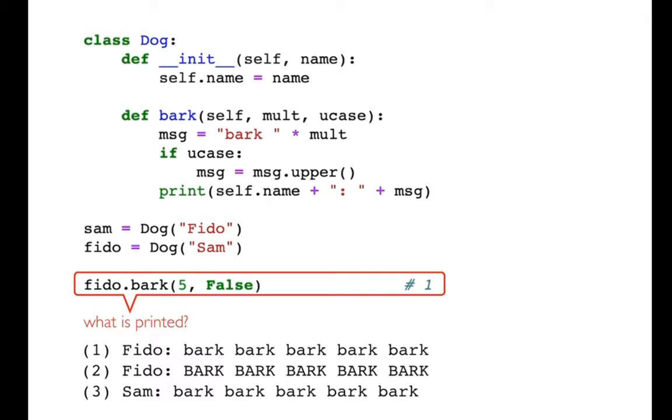Okay, so what happens here when I say fido.bark? Well it's trying to put these arguments in like this. Fido is going to go to self, five is going to go to multiply, and then false is going to go to uppercase. So what does that mean? That means that fido is a variable that's going to refer to an object, and self is really just a special variable that's going to refer to that same object.